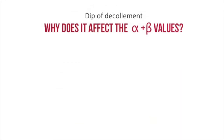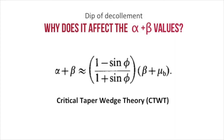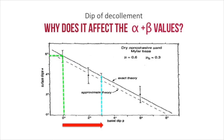Now let's investigate how the décollement dip affects the critical taper value. This can be explained using the critical taper wedge theory, which follows the equation below. In a nutshell, an increase in basal dip results in a smaller surface slope, alpha, and hence an overall decrease in alpha plus beta values.